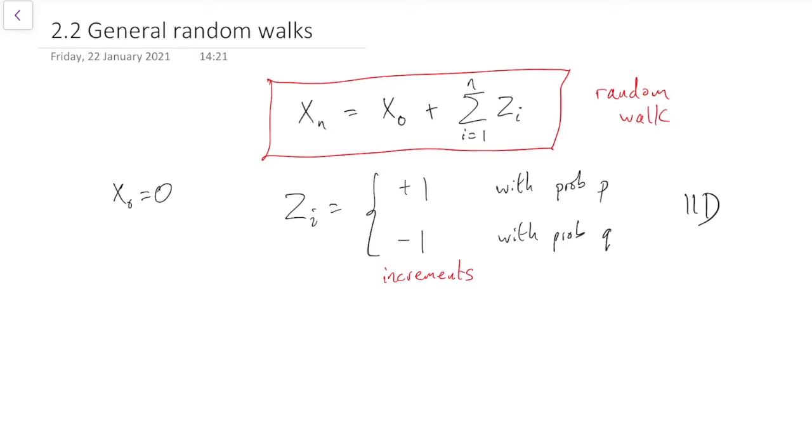So anything that satisfies this red box equation at the top is called a random walk. In the particular case where the increments are plus or minus 1 with probabilities p and q, and we start from 0, that's a simple random walk. So the simple random walk is the most important one that we looked at in the previous subsection. But more generally, anything that follows the red boxed equation is a random walk, for some different distribution of X0 and all these Zi's.